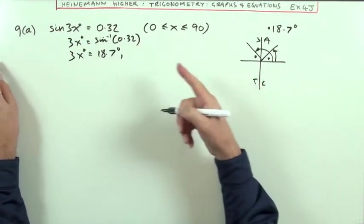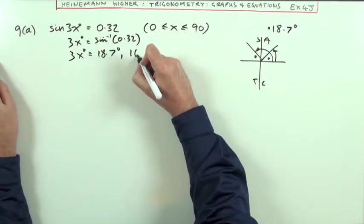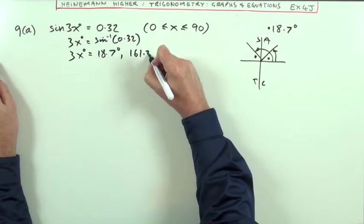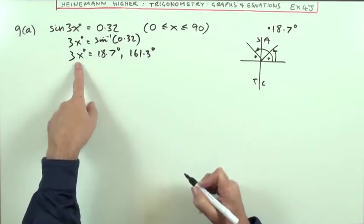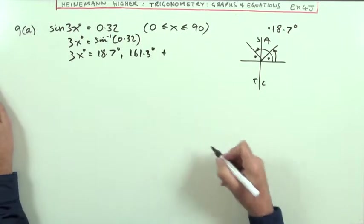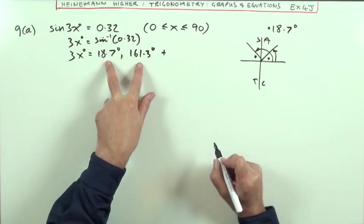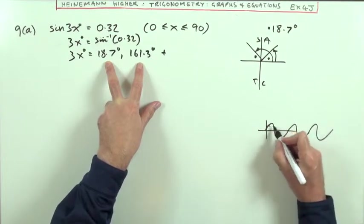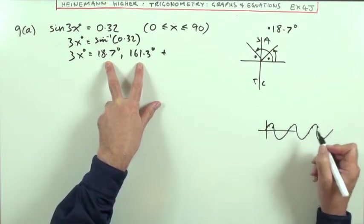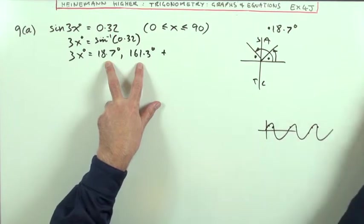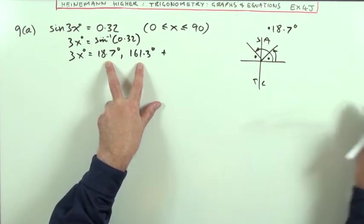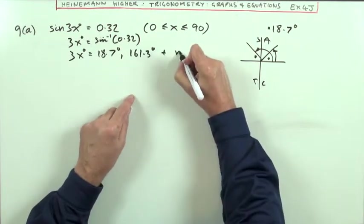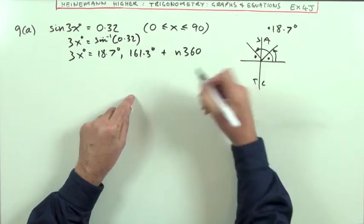Or 18.7 short of 180, which is 161.3 degrees. With these compound angles, I'll go for the general solution. These wavelengths keep repeating, and the solutions repeat over and over again forwards and backwards every 360 degrees since that's the period of sine.